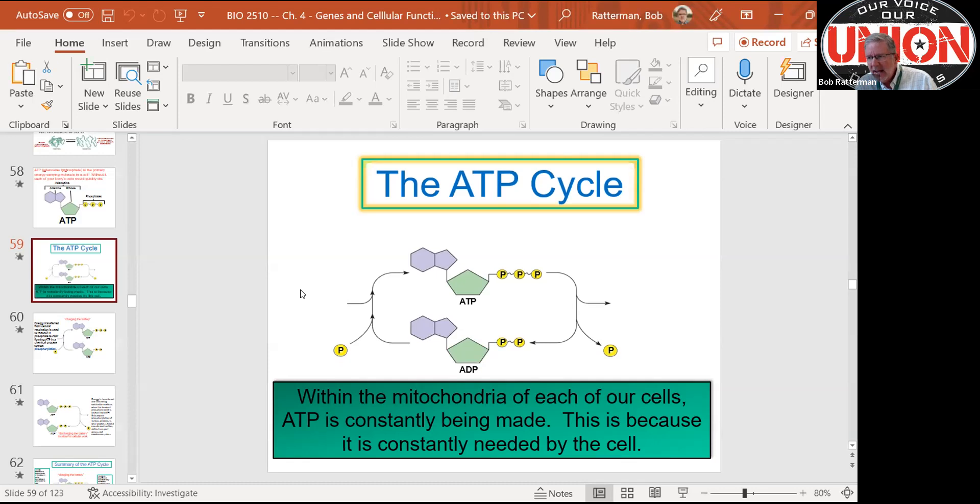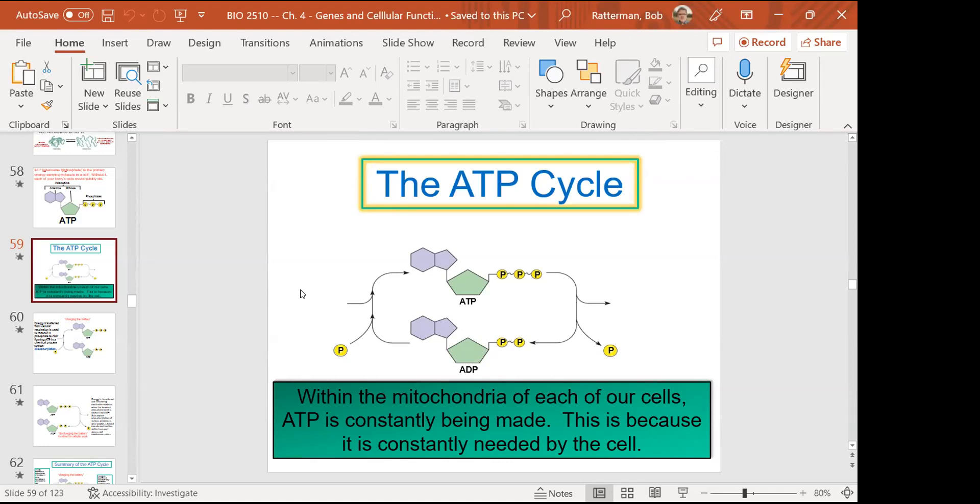So here we're looking at the ATP cycle. You can see the molecule here at the top. Remember what ATP stands for? Adenosine triphosphate. You can see the three phosphate groups on this molecule. What does this kind of look like? If we take those two phosphates off, this could very much resemble a nucleotide. If you think back to DNA, you have the sugar, the base, and the phosphate group.